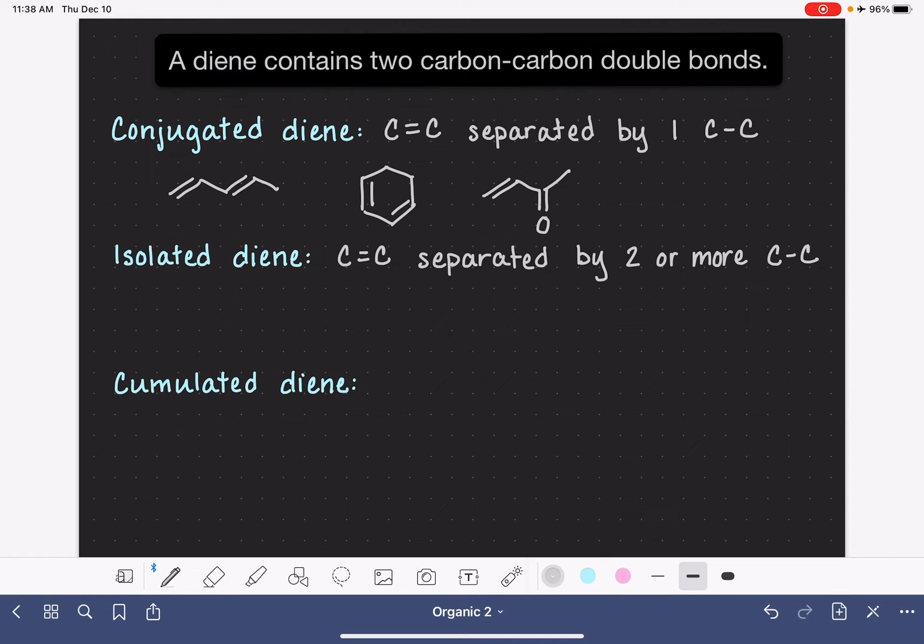Here would be some examples of isolated dienes. In this molecule, the double bonds are separated from each other by exactly two single bonds. This would be a cyclic isolated diene.